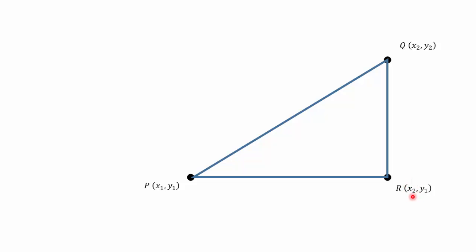The x-coordinate is x2 because it is directly below Q with the x-coordinate of x2. The y-coordinate is y1 because it is directly horizontal to P, which has the y-coordinate of y1.